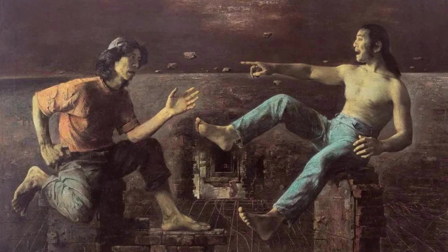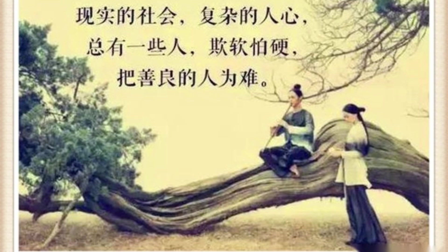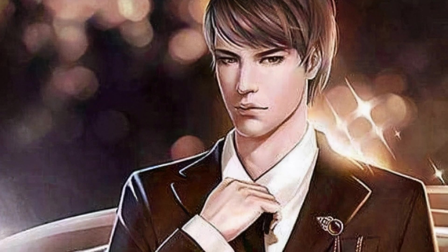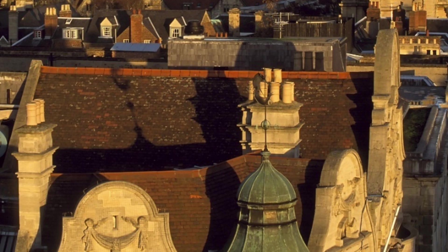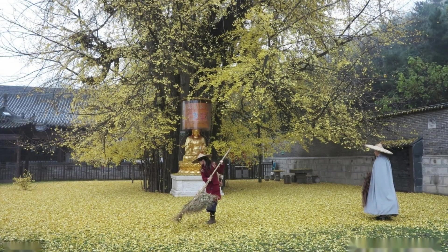Northanger Abbey also embodies the author's concern for the plight and social status of women at the time. Most of the female characters in the novel are bound by social customs and family pressure, and have to choose between marriage and family. Through the experiences of the two heroines, Catherine and Eleanor, the author explores the issues of women's self-worth and sense of freedom, as well as how to find true love and happiness.